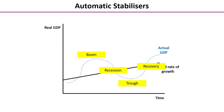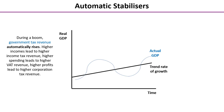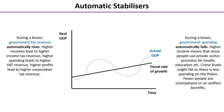Let's link that in with the impact on fiscal policy. During a boom, government tax revenue automatically rises. Higher income leads to higher income tax revenue. Higher spending by consumers and households leads to higher VAT revenue and excise duty revenue. Higher profits lead to higher corporation tax revenue. The flip side is what happens to government spending — and during a boom, government spending automatically falls.